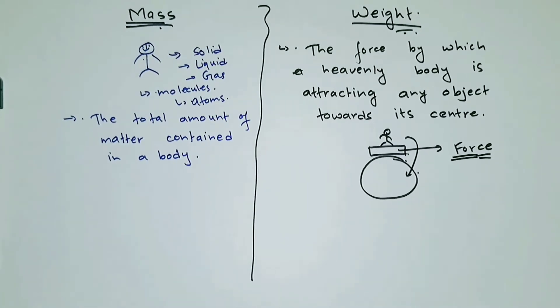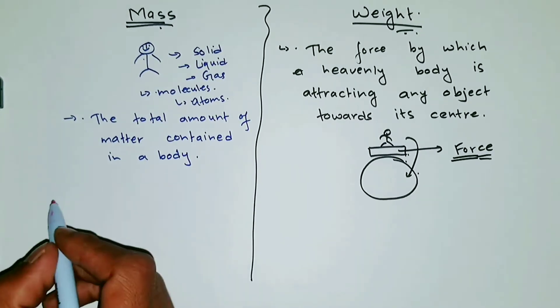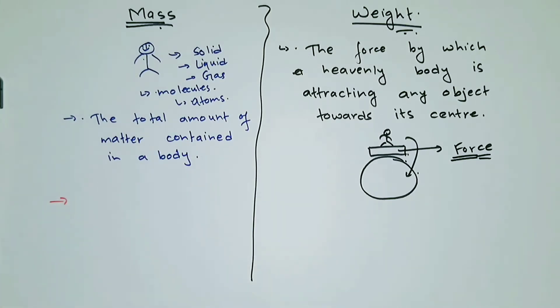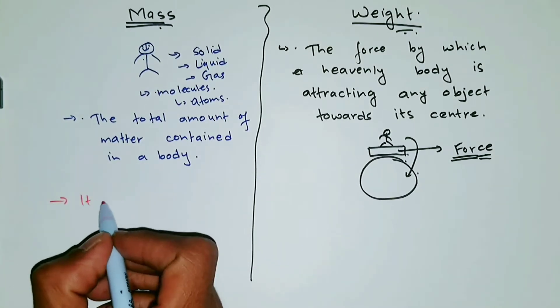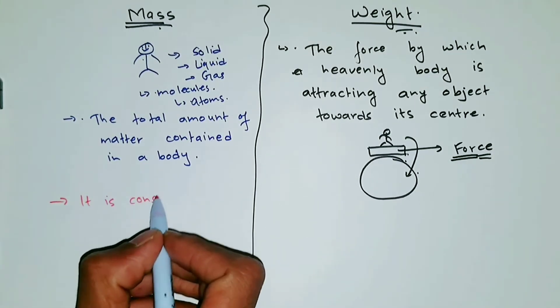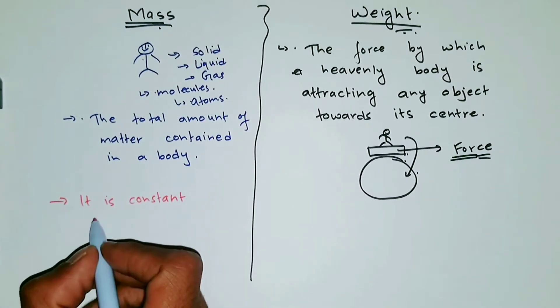So another difference that you can write is the mass does not change from place to place. It's always constant. So if you go to Jupiter, or let's say Saturn, your mass is always the same. The molecules don't disappear when you go to Saturn. So you can write, it is constant everywhere.